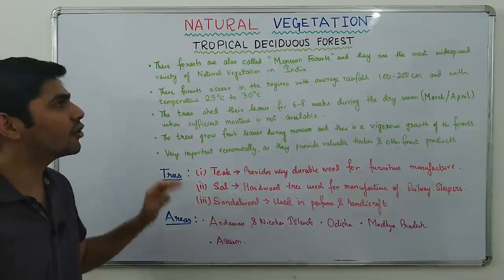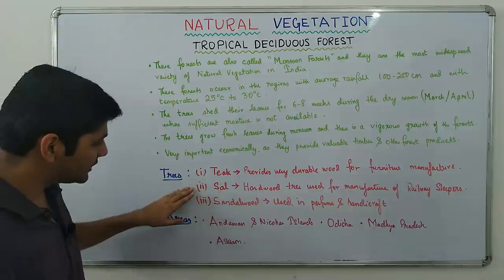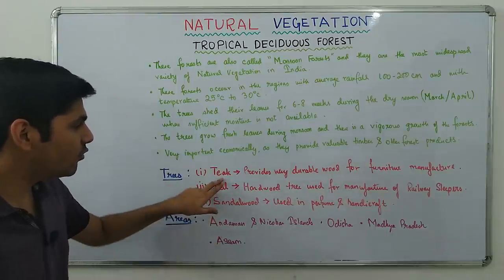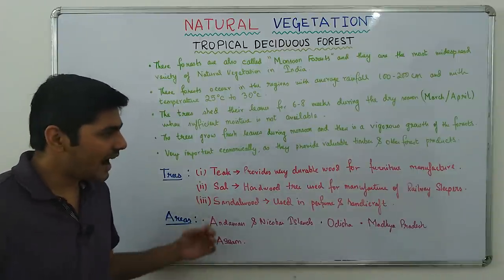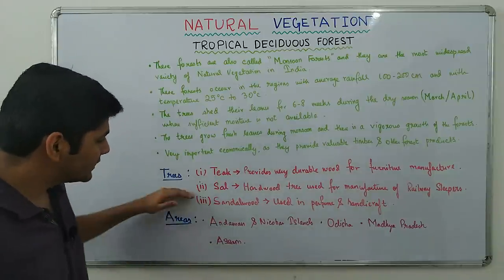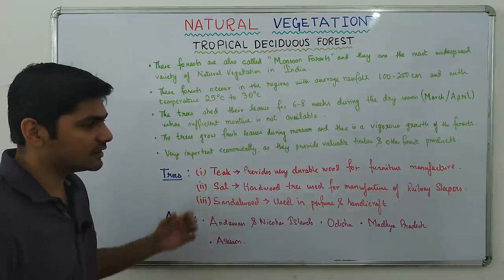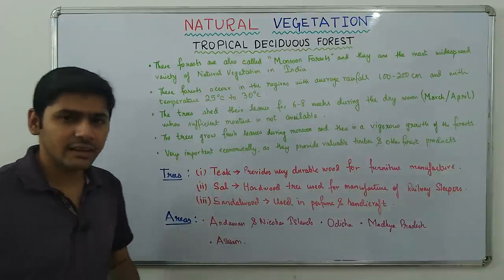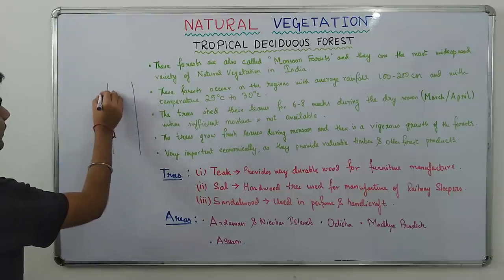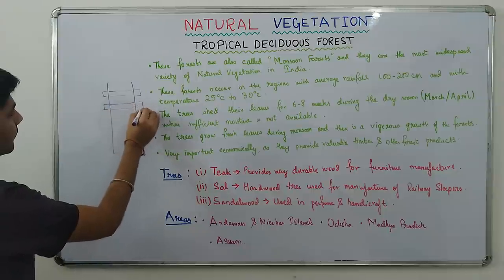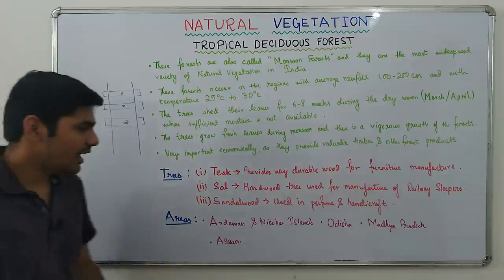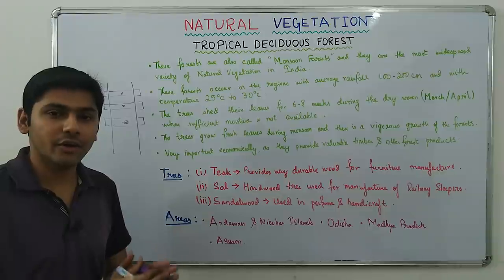The major trees found in Tropical Deciduous Forest are teak, sal, and sandalwood. Teak provides very durable hardwood used for furniture manufacture. Sal is a hardwood tree used for manufacturing railway sleepers — the wooden cross-pieces that support the two iron rails of a railway track — and also for furniture. Both are very durable types of wood.